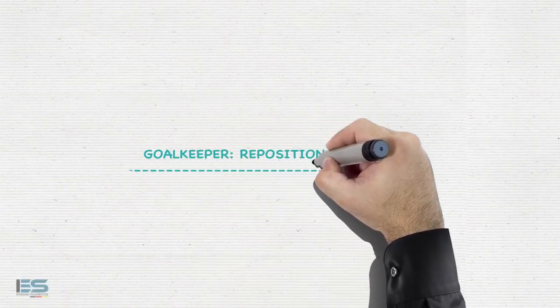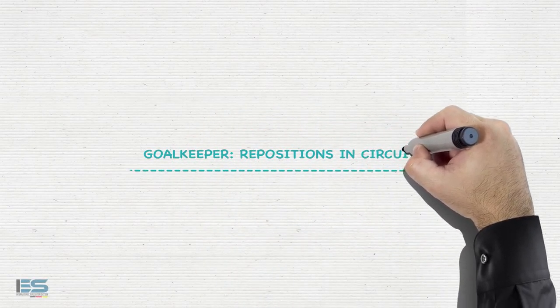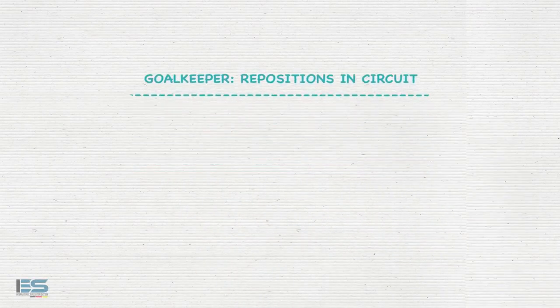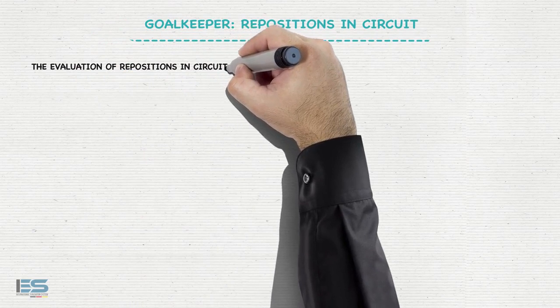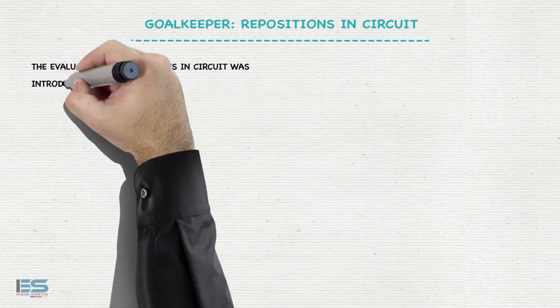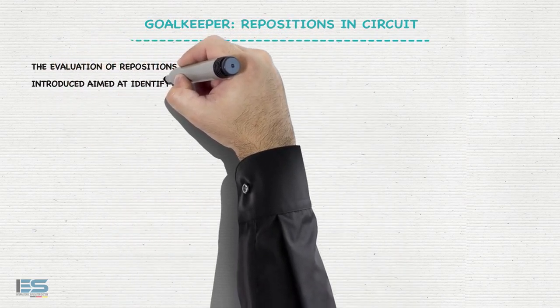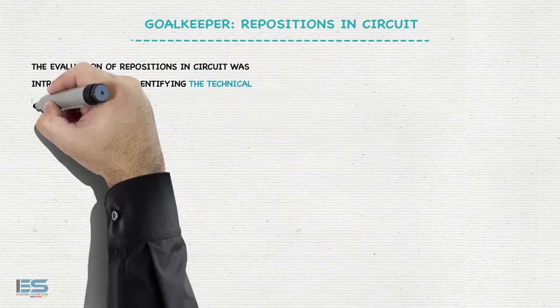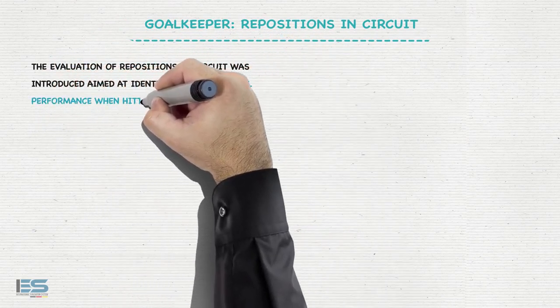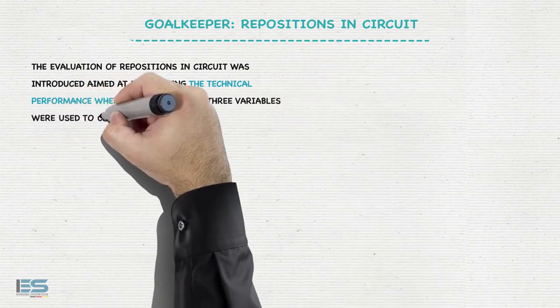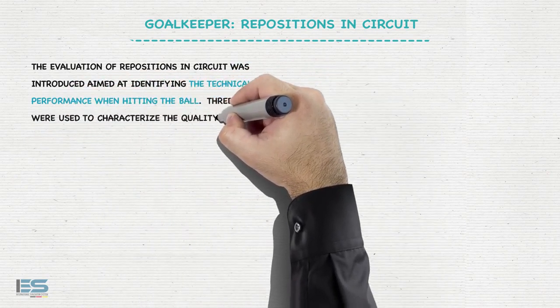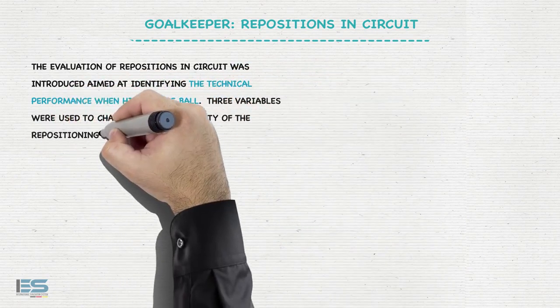Go Keeper — Repositions in Circuit. The evaluation of repositions in circuit was introduced aimed at identifying the technical performance when hitting the ball. Three variables were used to characterize the quality of the repositions.